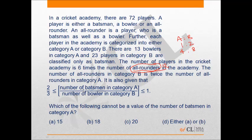There is one more instruction: the ratio of number of batsmen in category A to the number of all-rounders in category B is between 2/3 and 1. We need to know which of the following cannot be the value of the number of batsmen in category A.